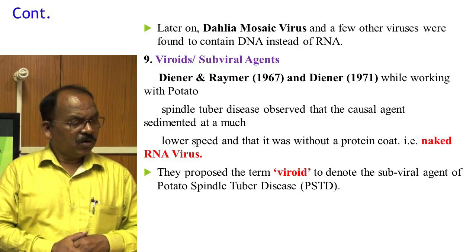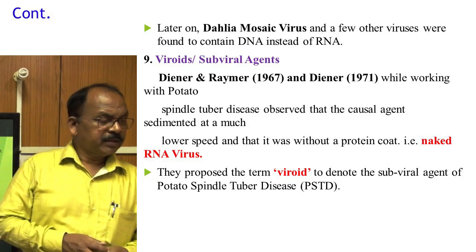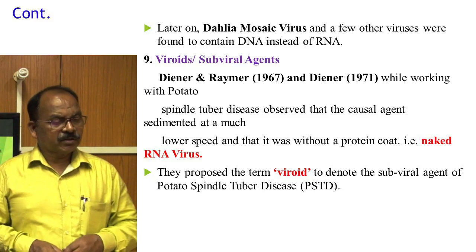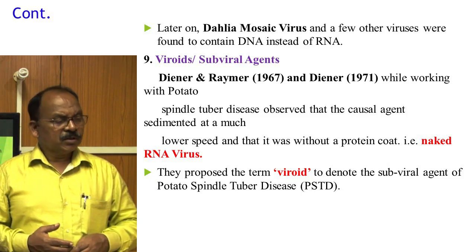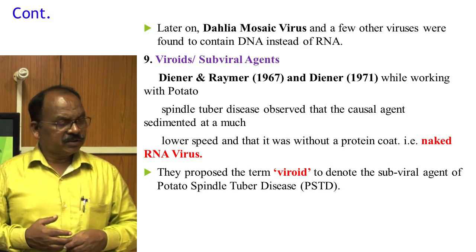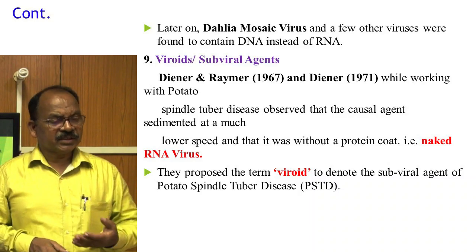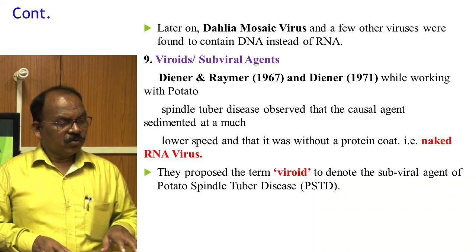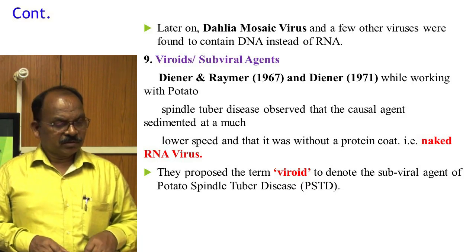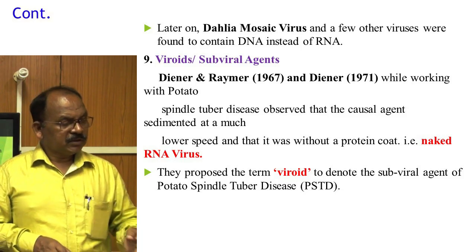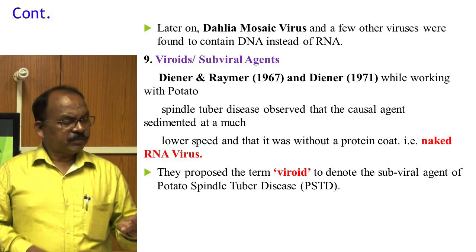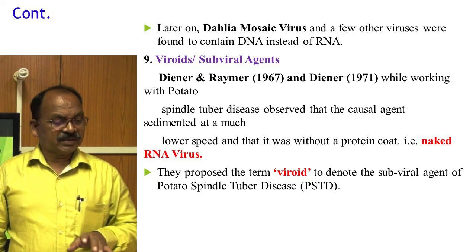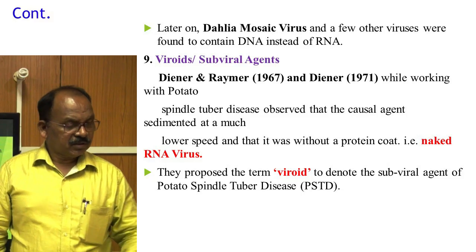Viroids or sub-viral agents: Diener and Raymer in 1967 and Diener in 1971, while working with potato spindle tuber disease, observed that the causal agent sedimented at a much lower speed and was without a protein coat — that is, a naked RNA agent. They proposed the term veroid to denote the sub-viral agent of potato spindle tuber disease.